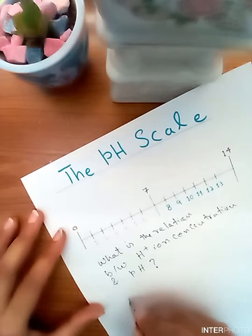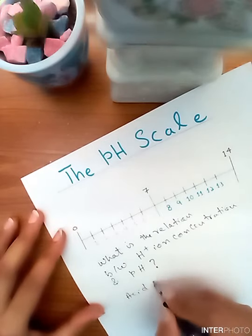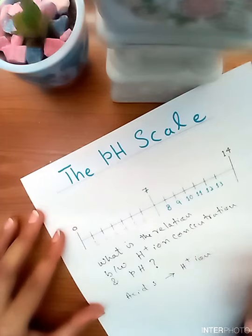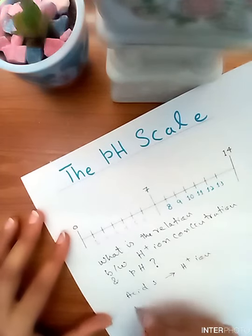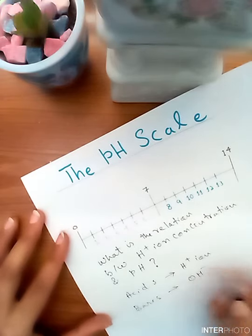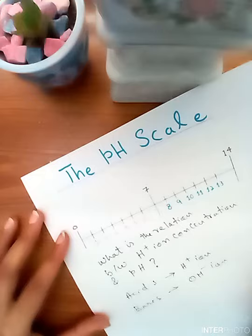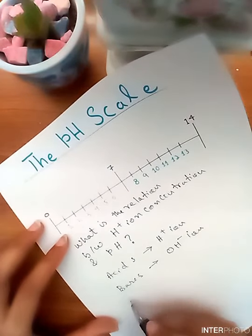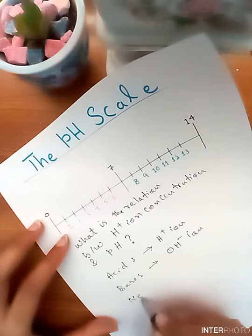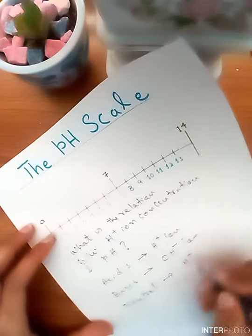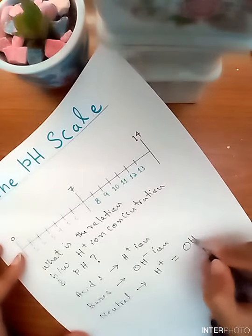Acids produce H-positive ions in water, while alkalies or bases produce OH-positive ions in water. Neutral substances contain equal number of H-positive and OH-negative ions.